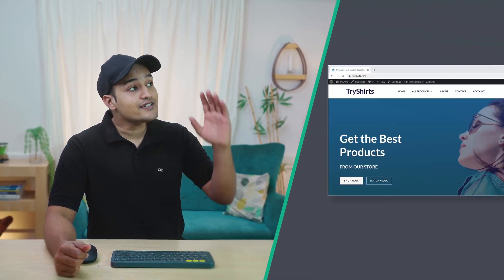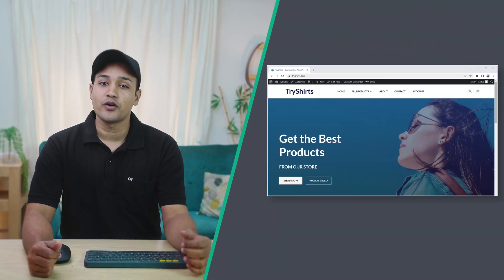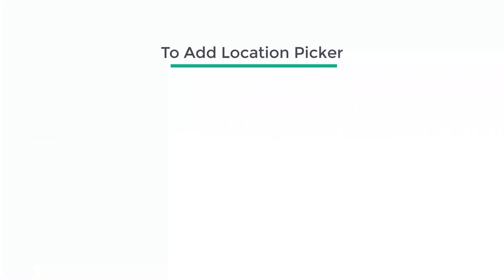Now before we begin, we need to have an ecommerce website on WordPress. So this is the ecommerce website which we have on WordPress. Now if you don't have an ecommerce website, just watch this video and create one. Now to add a location picker to our ecommerce website, we are going to do three steps.